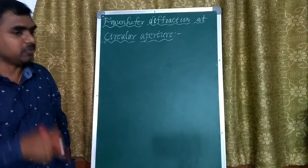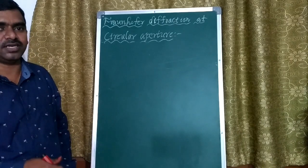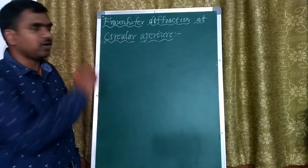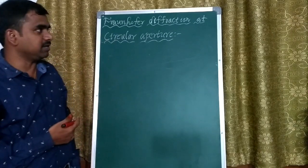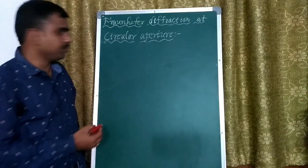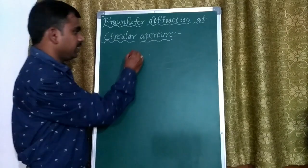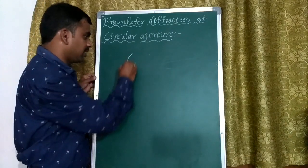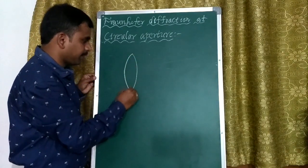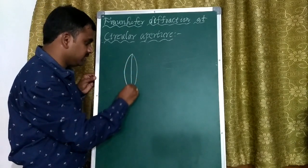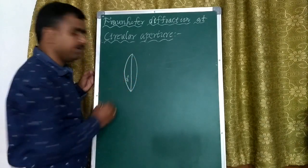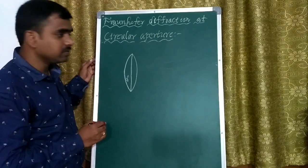To understand this concept, we first need to know about Fraunhofer diffraction at a circular aperture. For that, we take a circular aperture whose diameter is D.